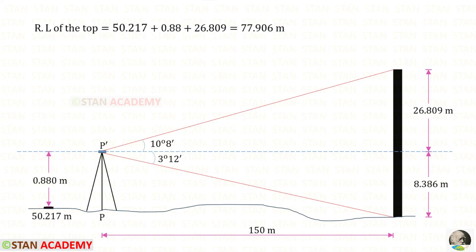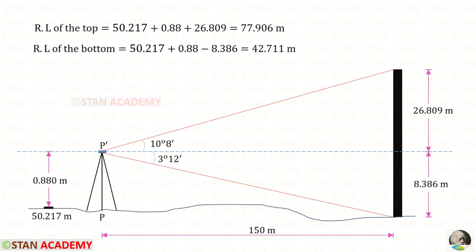To find the reduced level of the top, we add the reduced level at the benchmark, the staff reading, and H2. To find the reduced level of the bottom, we first add the reduced level at the benchmark and the staff reading, then subtract H1.